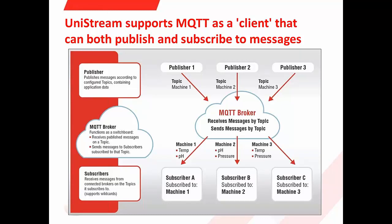Whenever the publishers at the top publish this information, the data will automatically be sent by the broker to the subscriber. This protocol is not like the ordinary client-server you may know. For example, with Modbus, the master always needs to poll in order to get new information, which loads the network. With MQTT, if there is no new information to send, the publisher will not send it — only when the publisher has new information will the subscriber receive it.